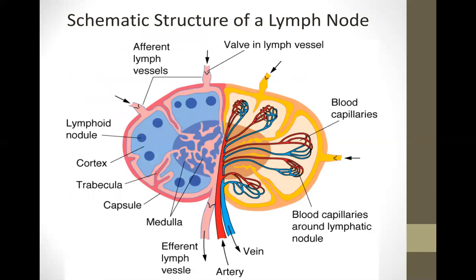This schematic of a lymph node shows the afferent lymphatic vessels with valves. Lymph enters, goes to the cortex, paracortical area, then medullary sinuses, and exits using the efferent lymphatic vessels. Blood vessels (arteries) carry oxygenated blood inside the organ through capillaries for exchange; deoxygenated blood exits via the vein — just like any other organ.